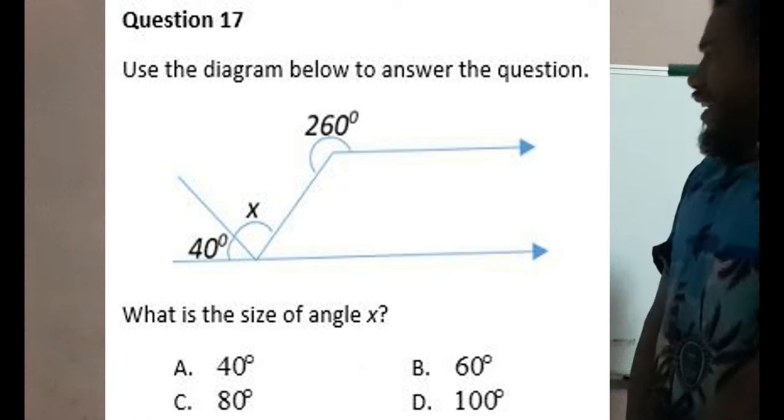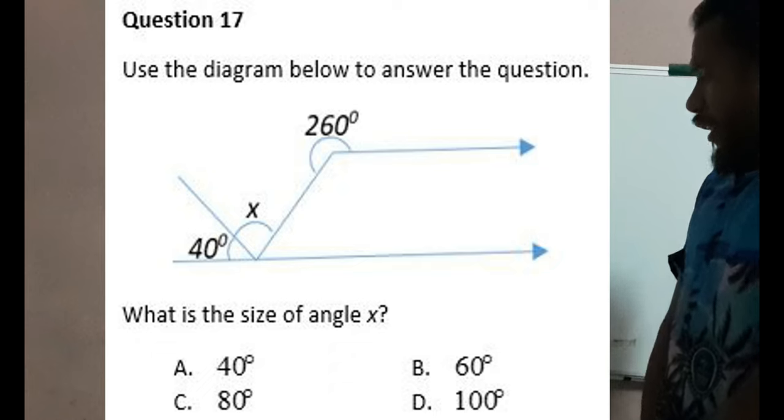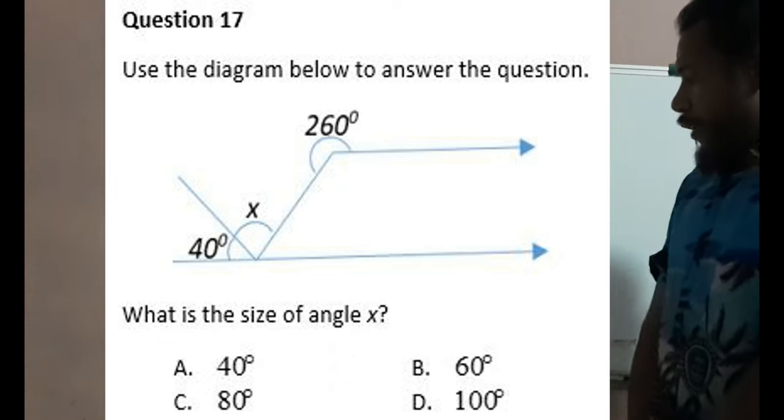Question 17 reads: Use the diagram below to answer the question. What is the size of angle x? A: 40 degrees, B: 60 degrees, C: 80 degrees, and D: 100 degrees.